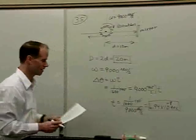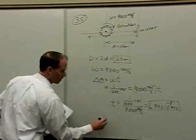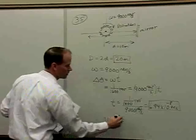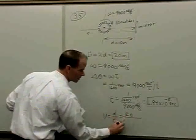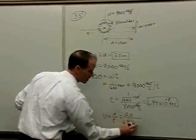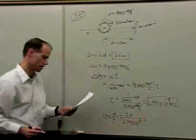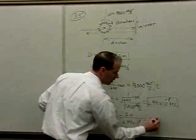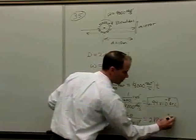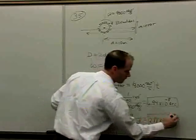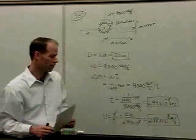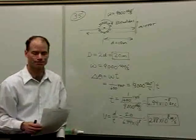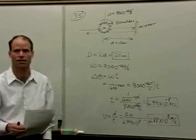Velocity equals distance over time, so that's 20 meters divided by 6.94 × 10⁻⁸ seconds, giving us a speed of light of 2.88 × 10⁸ meters per second. The actual value is around 2.998 × 10⁸, so that's a very good measurement. Our answer would be C on problem 5.